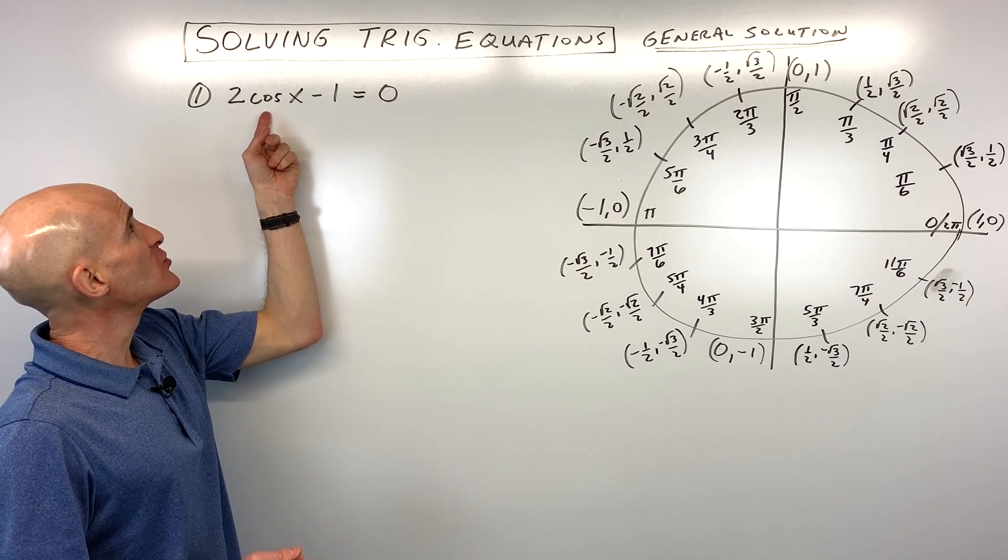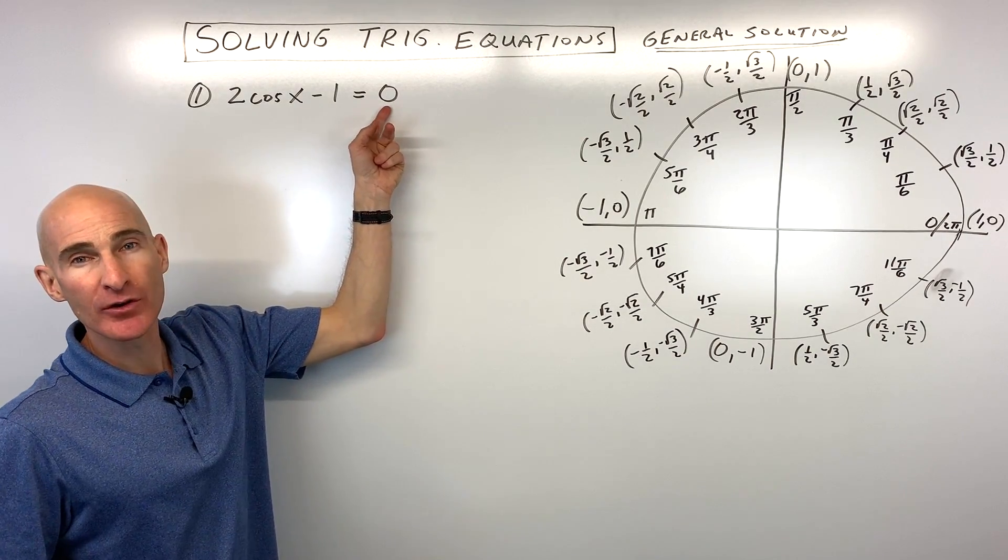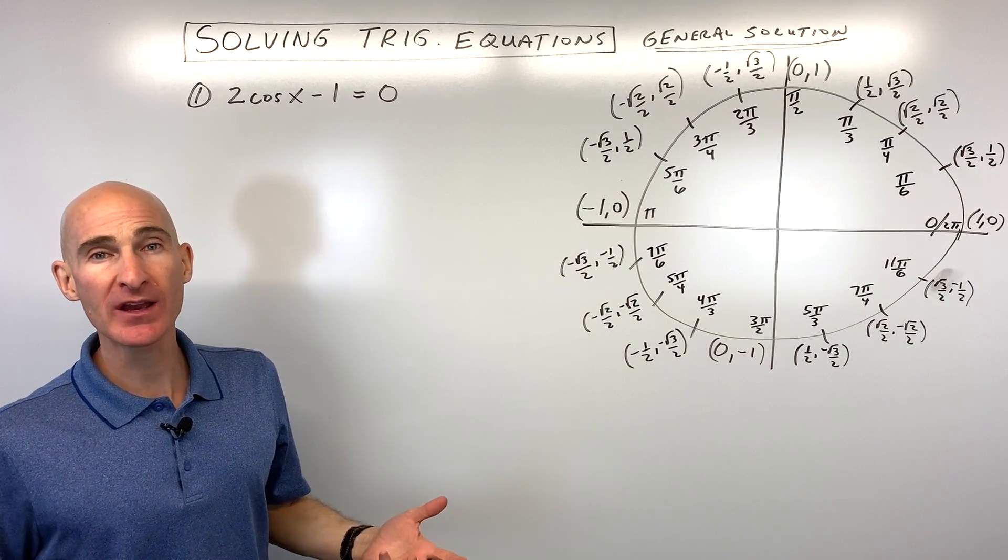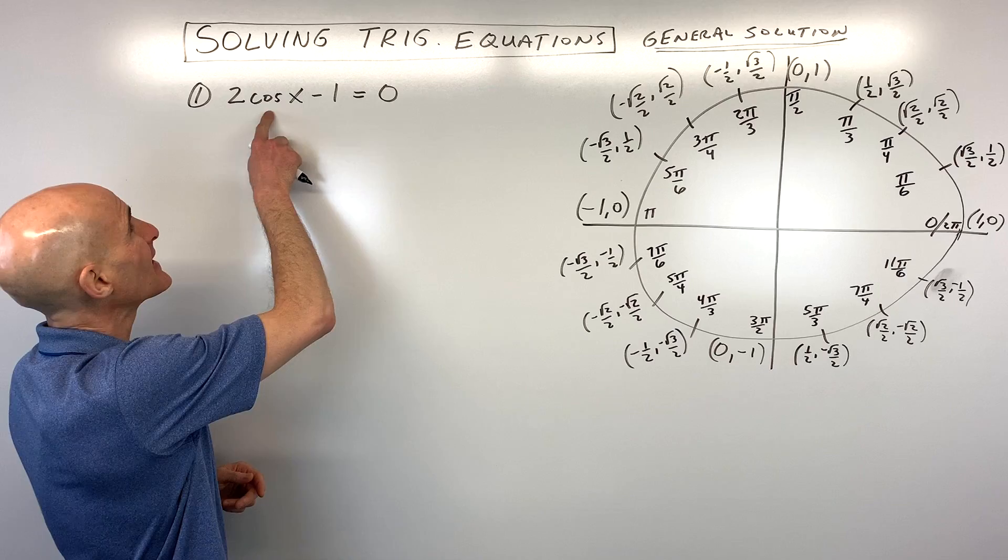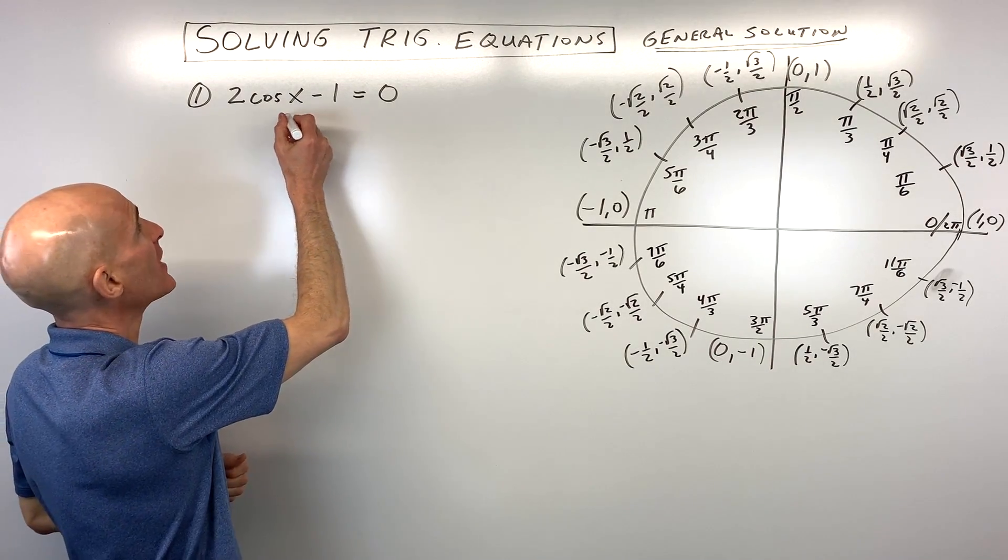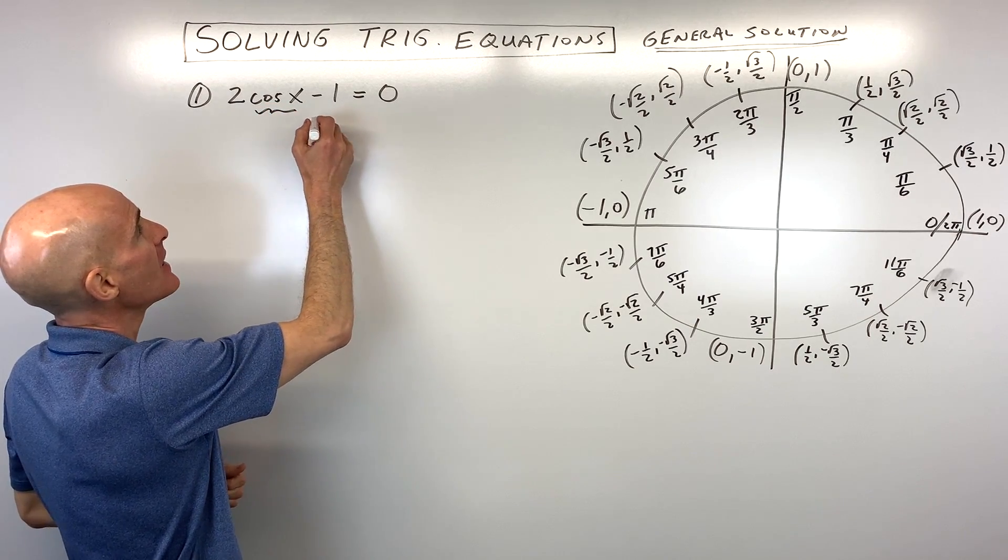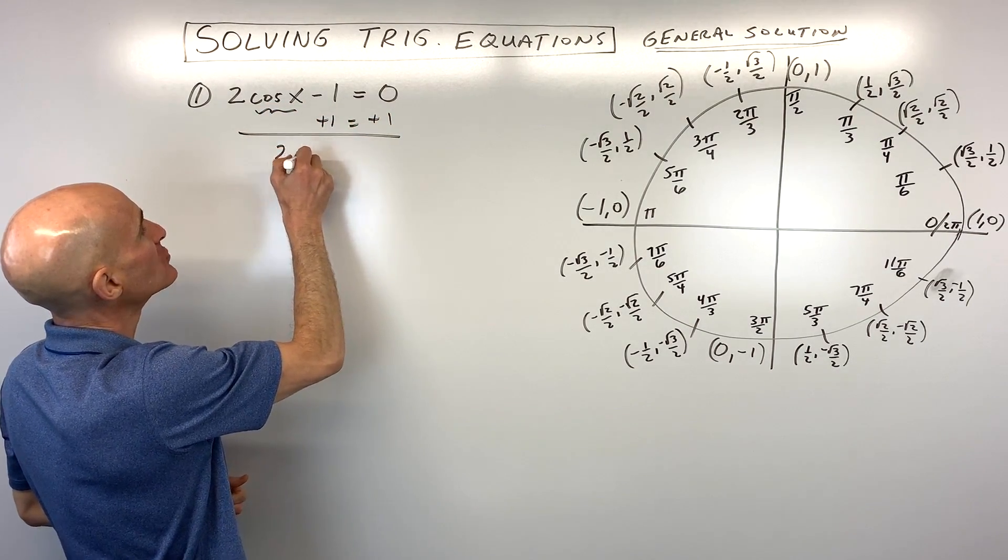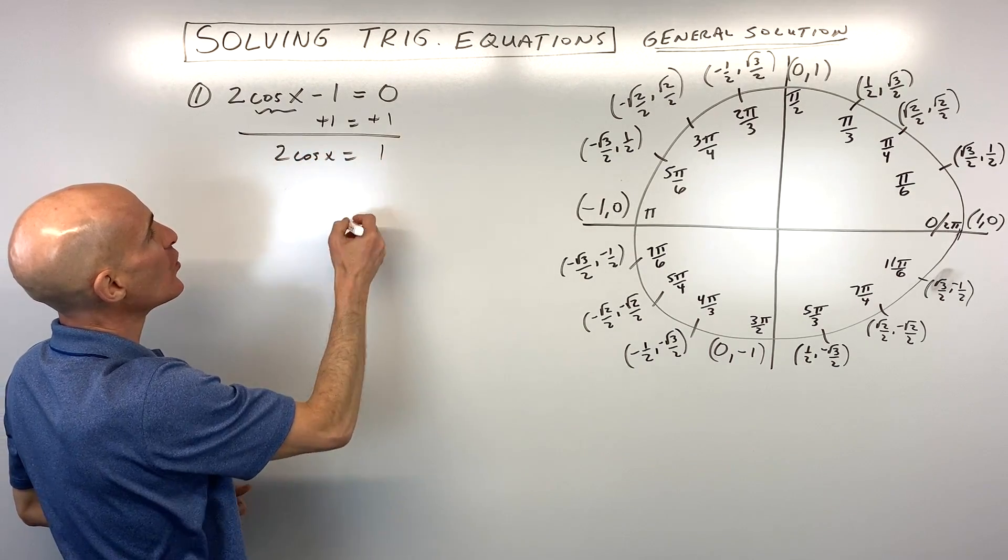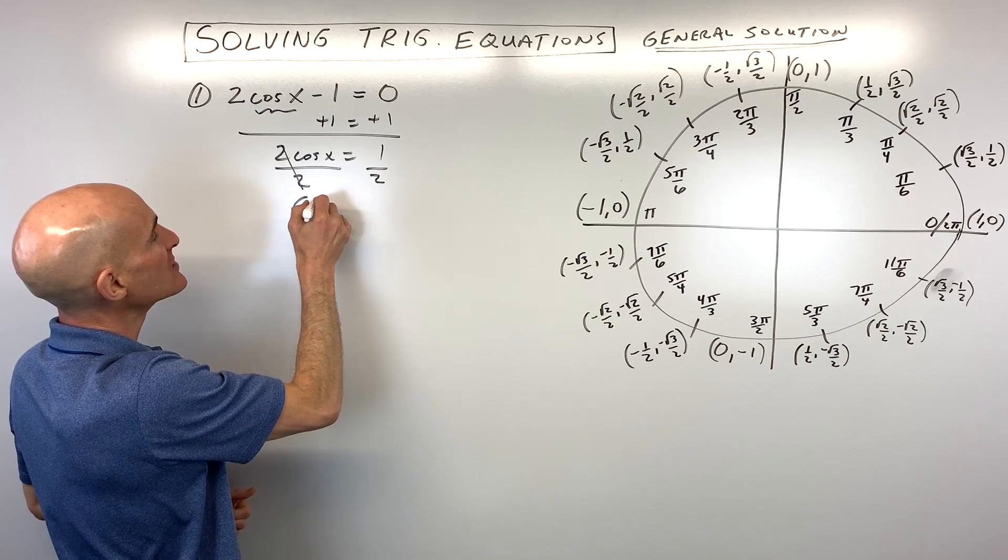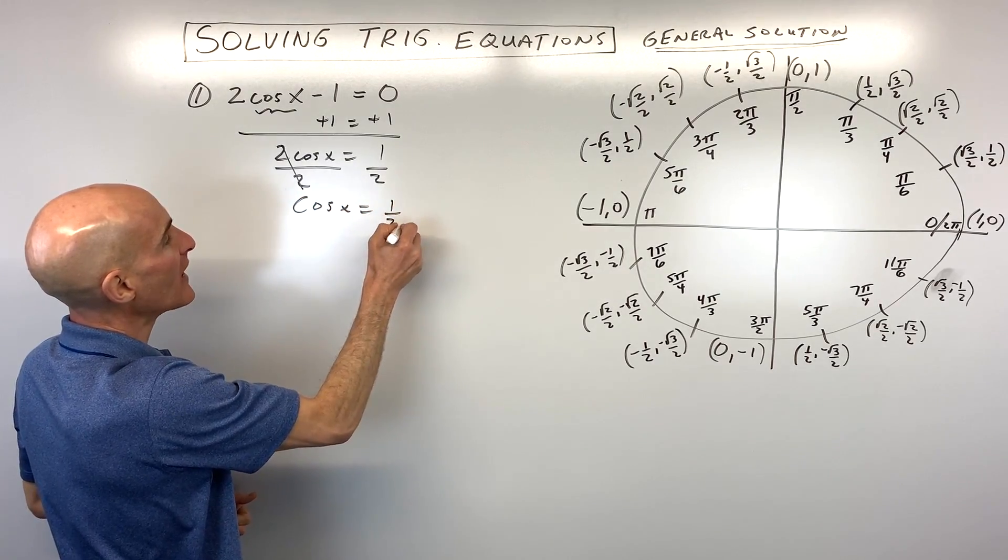The first one, we've got 2cosx minus 1 equals 0. So when you're solving these trig equations, it's very similar to solving algebraic equations, but you want to get the trig function by itself on one side of the equation. So what we're going to do here is we're going to isolate this cosine of x by adding 1 to both sides of the equation. So now we have 2cosx equals 1. We're going to divide both sides by 2. And so now you can see that we have cosine of x equals 1 half.